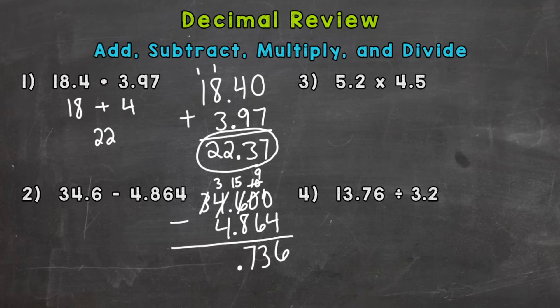I need to borrow again from the 3, which is now a 2. And that other 3 now becomes a 13. 13 minus 4 is 9. And then bring my 2 down. 2 minus 0 there would give me 2. So 29.736. So let's estimate here. Let's do an estimation. So 34.6 would round to 35. 4.864 would round to 5. So 35 minus 5, our estimation would be 30. So our actual answer is reasonable. It makes sense.